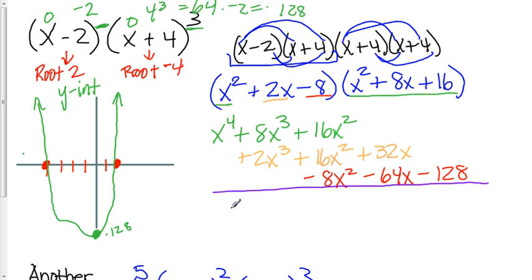Adding it all up and combining like terms would get you a polynomial of x to the 4th plus 10x to the 3rd plus 24x squared minus 32x.